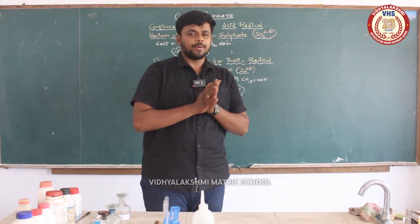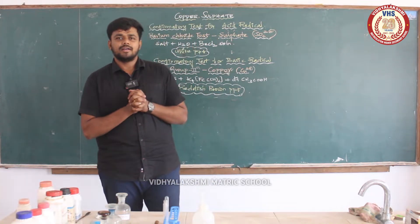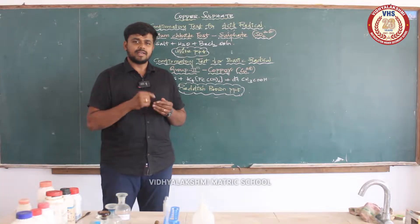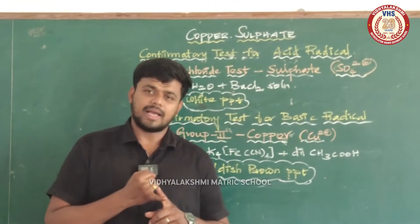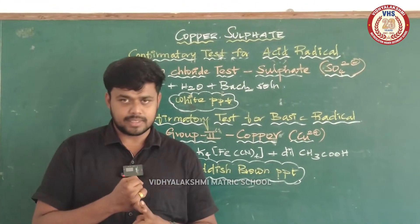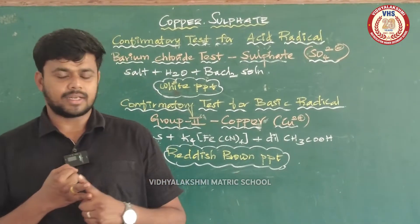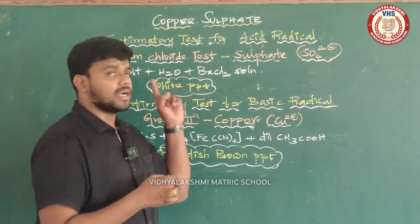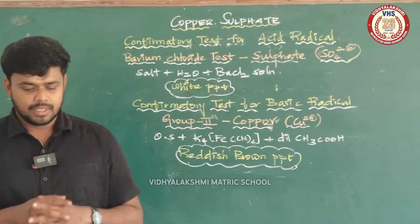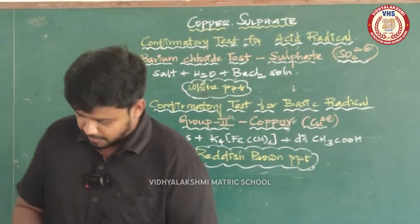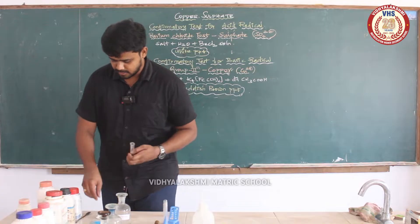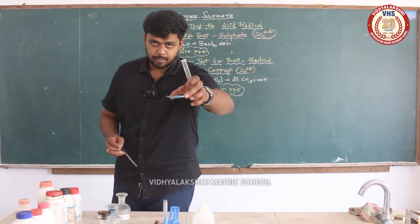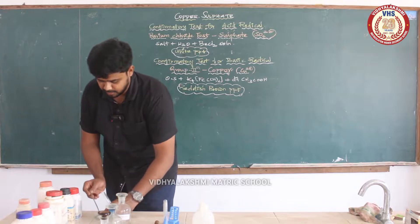Next time we will talk about copper sulfate. Copper sulfate involves an acid radical test and a basic radical test. Sulfate is an acid radical test using a barium chloride test. You have to take the salt — copper sulfate is a blue color salt.